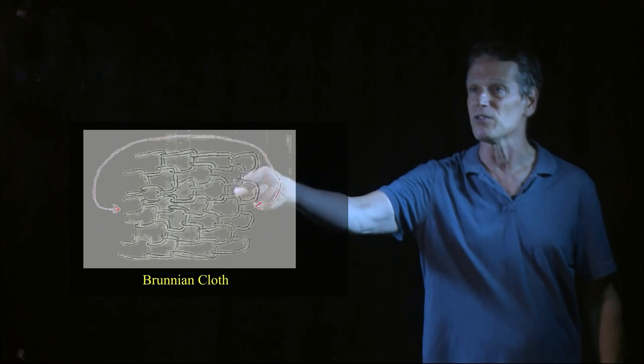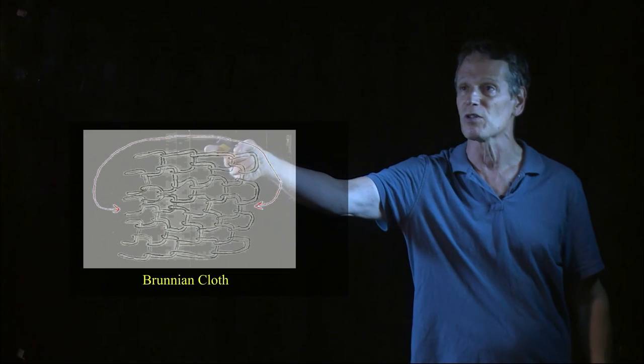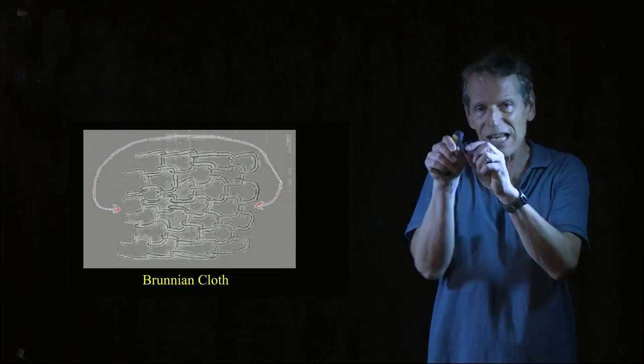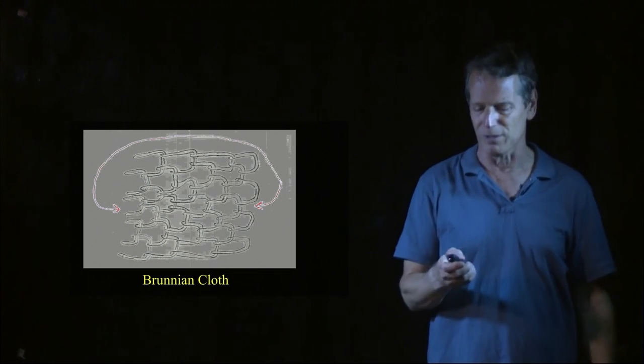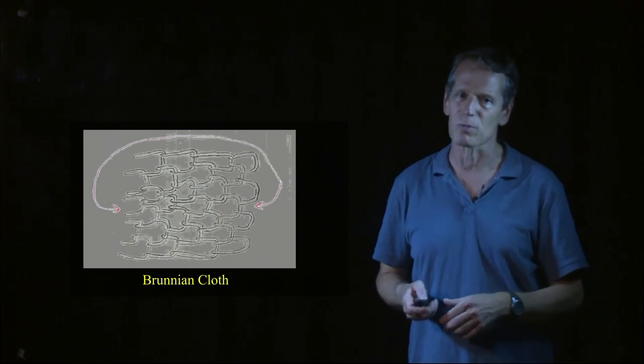Now the interesting thing about this is if you take any one of these components and you cut it open and pull it out, in fact, then the next ring will be able to come out, then the next ring will be able to come out, and the whole thing will disappear. So there is such a thing as Brunnian clothes.